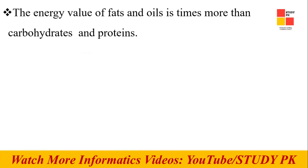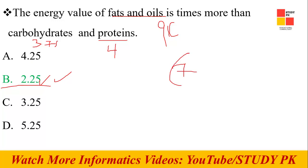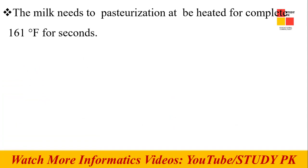Next question: The energy value of fats and oils is how many times more than carbohydrates and protein? The right option is 2.25 times. One gram of protein gives 4 calories, carbohydrates give 3.75 calories, and fats and oils give 9 calories per gram. Alcohol gives 7 calories per gram.